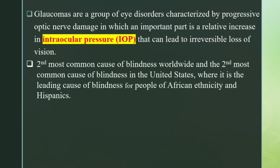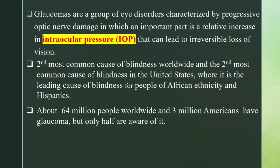Glaucoma is the second most common cause of blindness worldwide and the second most common cause of blindness in the United States, where it is the leading cause of blindness for people of African ethnicity and Hispanics. About 64 million people worldwide and 3 million people in America have glaucoma, but only half are aware of it.